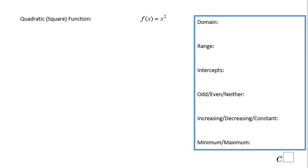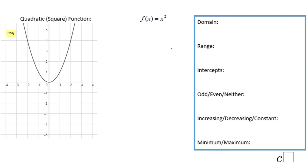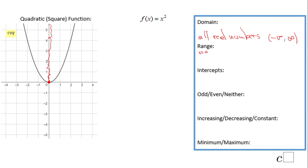The next function is f(x) = x squared — the quadratic function. Here is the graph of f(x) = x squared, which you can draw using a table. The domain is all real numbers — negative infinity to infinity. The range is similar to the absolute value: we can get only zero and positive numbers, so the range is non-negative numbers.